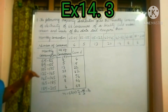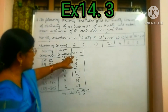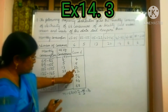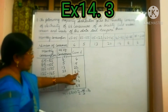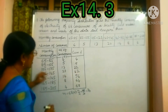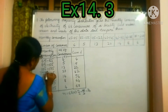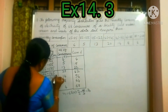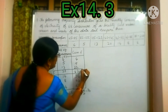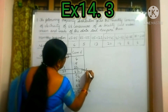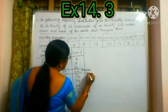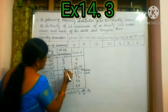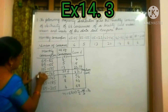So N/2 = 34. Where does it fall? Up to cumulative frequency 4, no. Up to 22, no. Up to 42, yes — 34 falls here. So this will be the median class. We have decided the median class is 125 to 145. After deciding this median class, we can write the cumulative frequency, normal frequency, and the lower boundary.